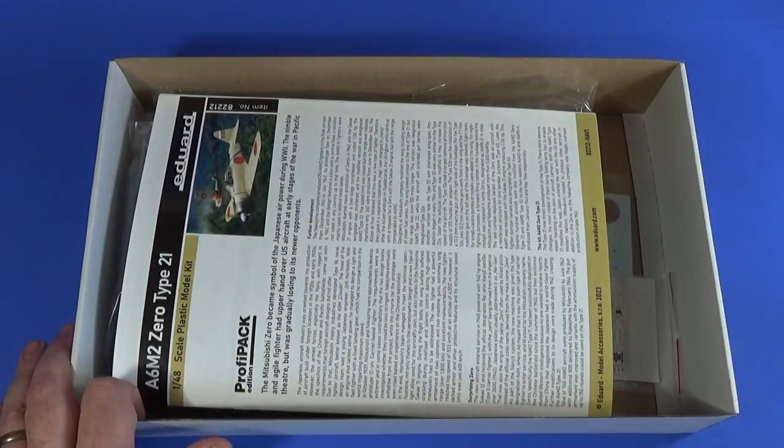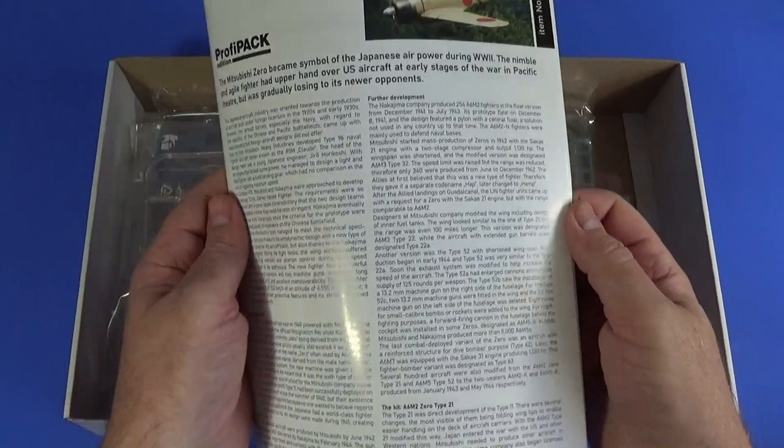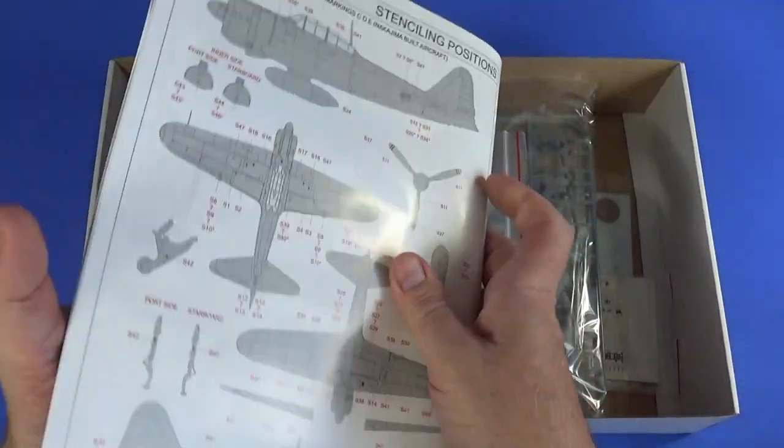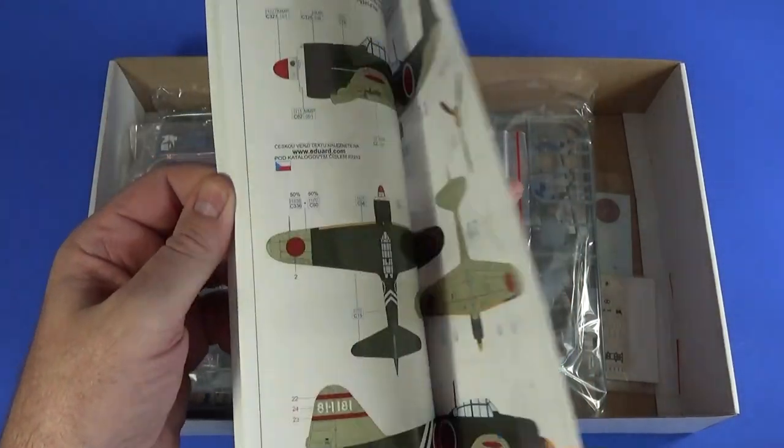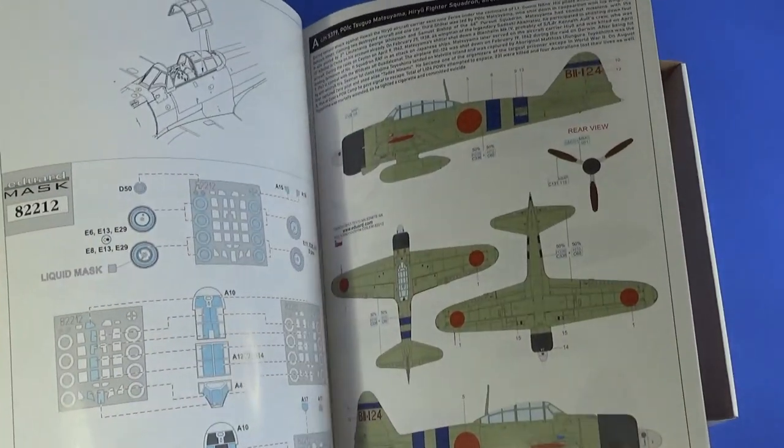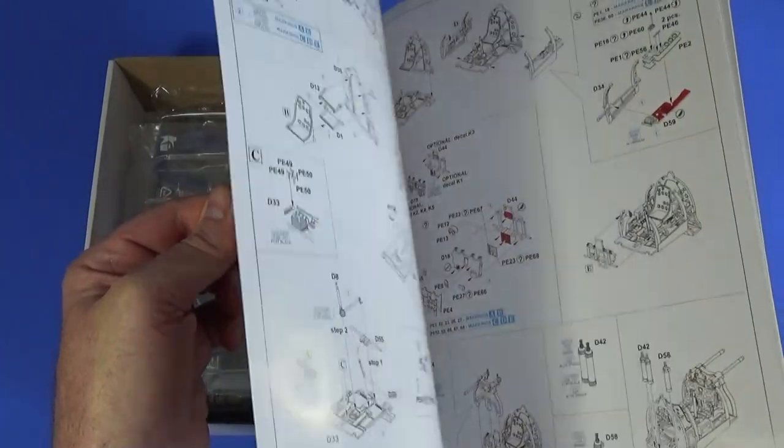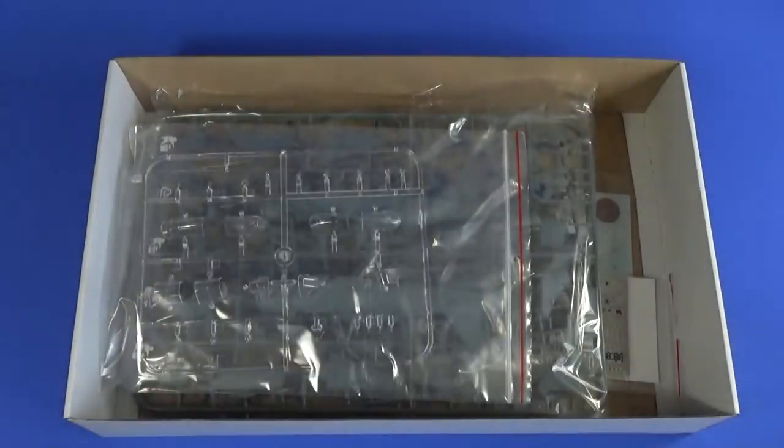Let's have a look and see what we get inside the box now. This we'll keep for a moment. I'll have a look at that in a minute. So, instructions. Glossy print, full colour. The schemes are at the back here. Touch about all the masks, all the different bits and pieces. We'll have a closer look at that in a bit.